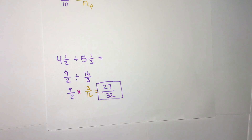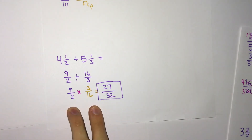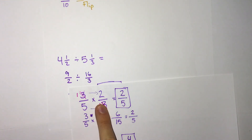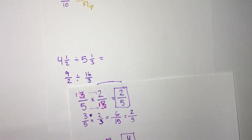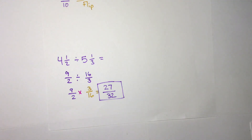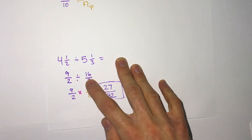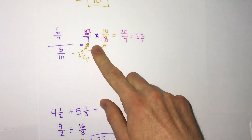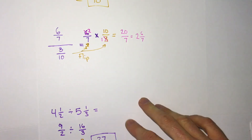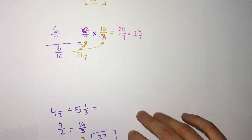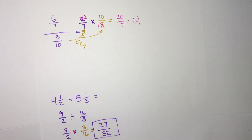So remember: for multiplying, always multiply straight across and look to see if anything cancels or simplifies first. The extra step with division is to take your second fraction that you're dividing by, flip it, and change it to multiplication. That is everything you need to know to be successful with multiplying and dividing fractions. Go to the practice assignment and practice those problems, and then you can go to the assessment.